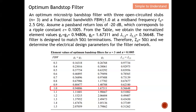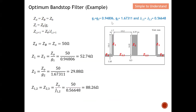The question asks for fractional bandwidth of 1, so from the table for n equals 3, the design elements are: g1 equals g3 equals 0.94806, g2 equals 1.67311, and the connecting lines j12 and j23 are both equal to 0.56648. The filter is designed to match a 50-ohm termination, so Z0 equals Za equals Zb equals 50 ohms. We need to determine the electrical design parameters for the filter network.